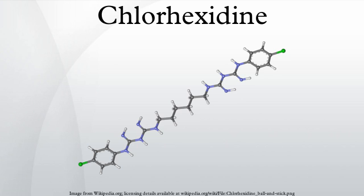Continued use of products containing chlorhexidine for long periods can cause stains on teeth, tongue, and gingiva, also on silicate and resin restorations. Prolonged use can also reduce bitter and salty taste sensations, though this symptom can be reversed by ceasing use. The brownish discoloration of teeth and tongue is due to the disintegration of bacterial membranes, leading to the denaturation of bacterial proteins. Disulfide functions are reduced to thiol functions that form dark complexes with iron(III) ions found in saliva.